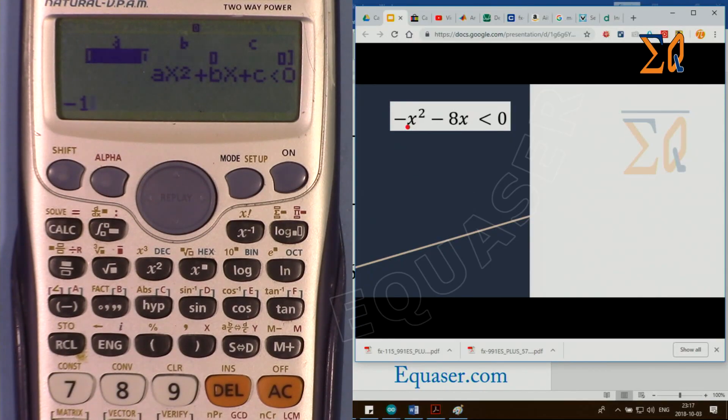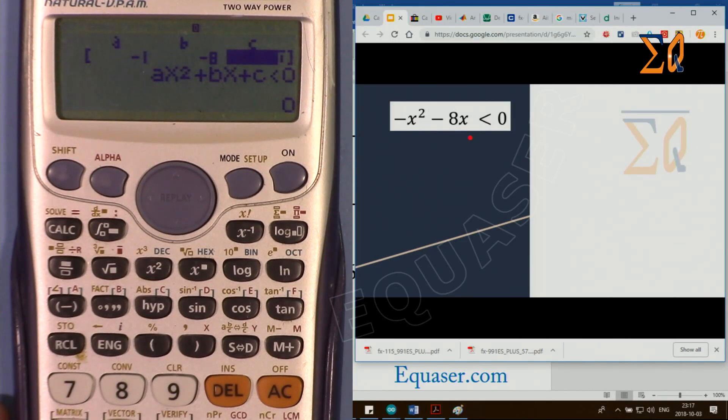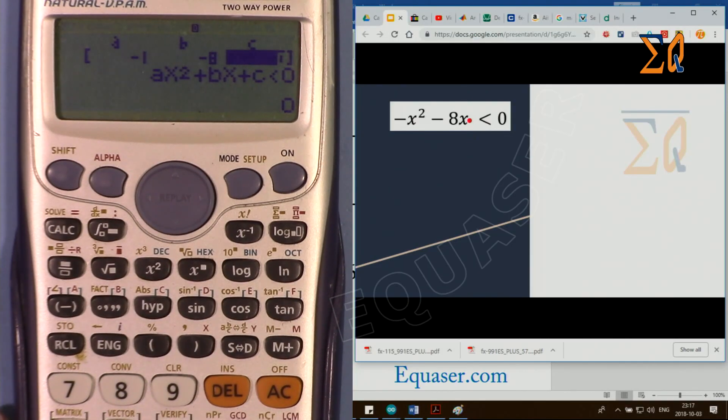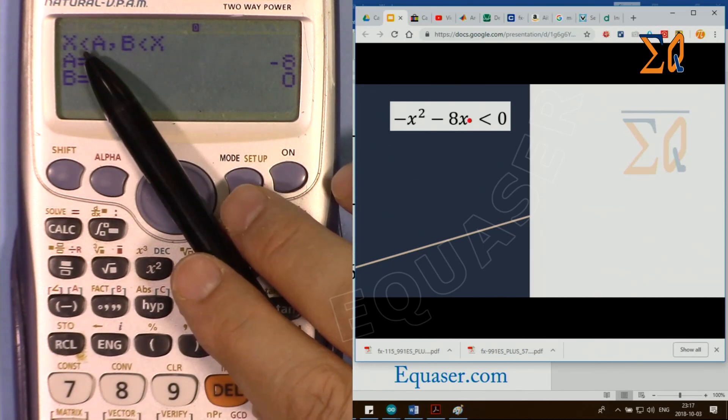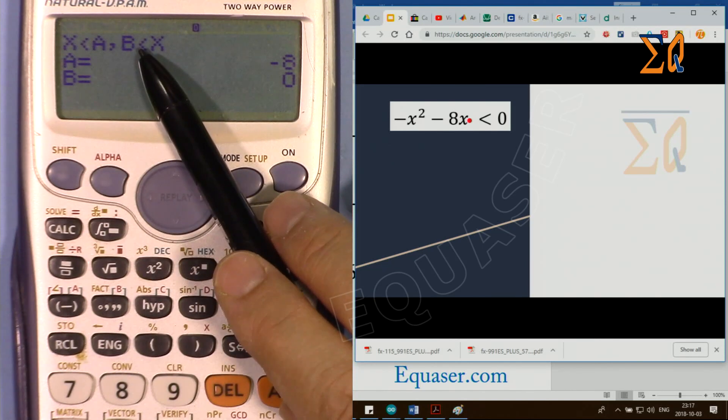Then equal. Second term is −8, equal sign, and then the last term we don't have anything, 0, and equal sign. Now when I press equal, it shows that when x is smaller than a and larger than b, y is smaller than 0.